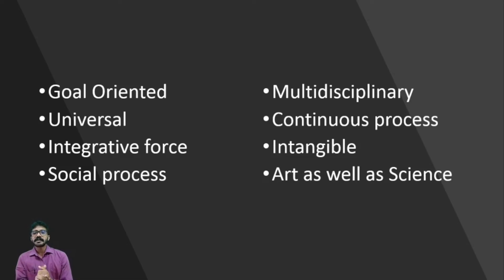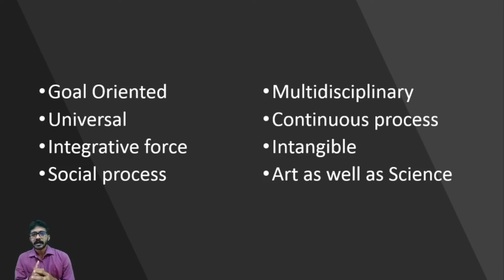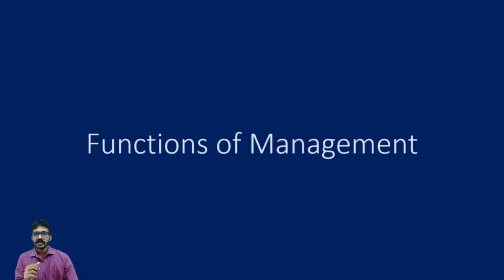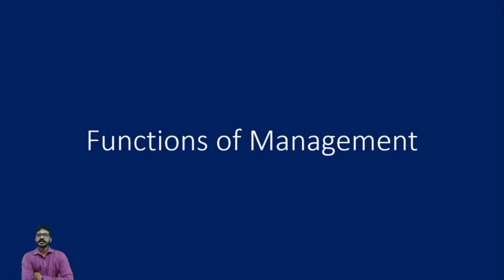The eighth characteristic is that management is both an art and a science. There are certain technical things that have to be managed — analyzing or predicting certain things — and these fall under the category of science. But having knowledge alone is not sufficient; we have to apply that knowledge wherever necessary, and this skill is what makes it an art. So these are the eight important nature and characteristics of management.